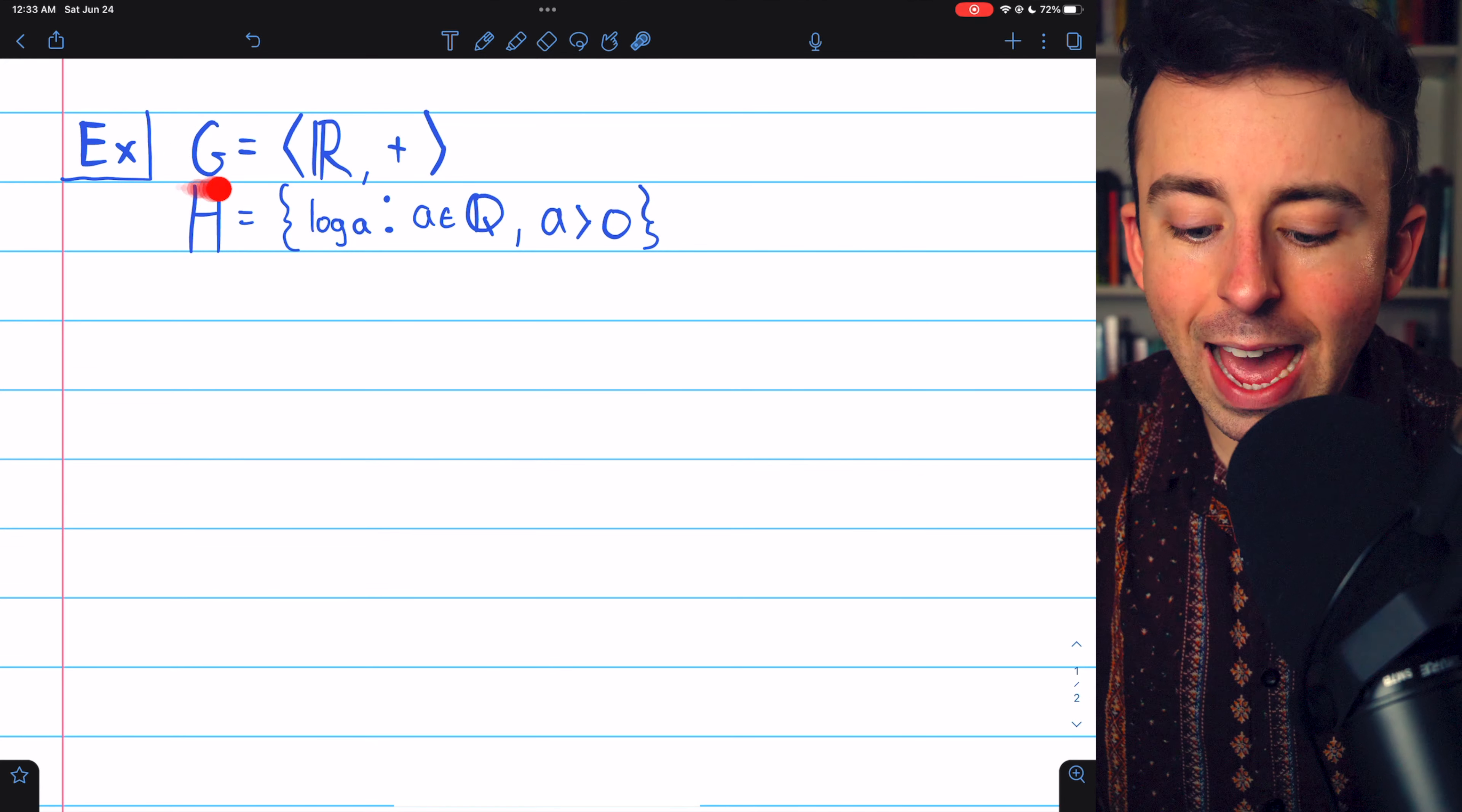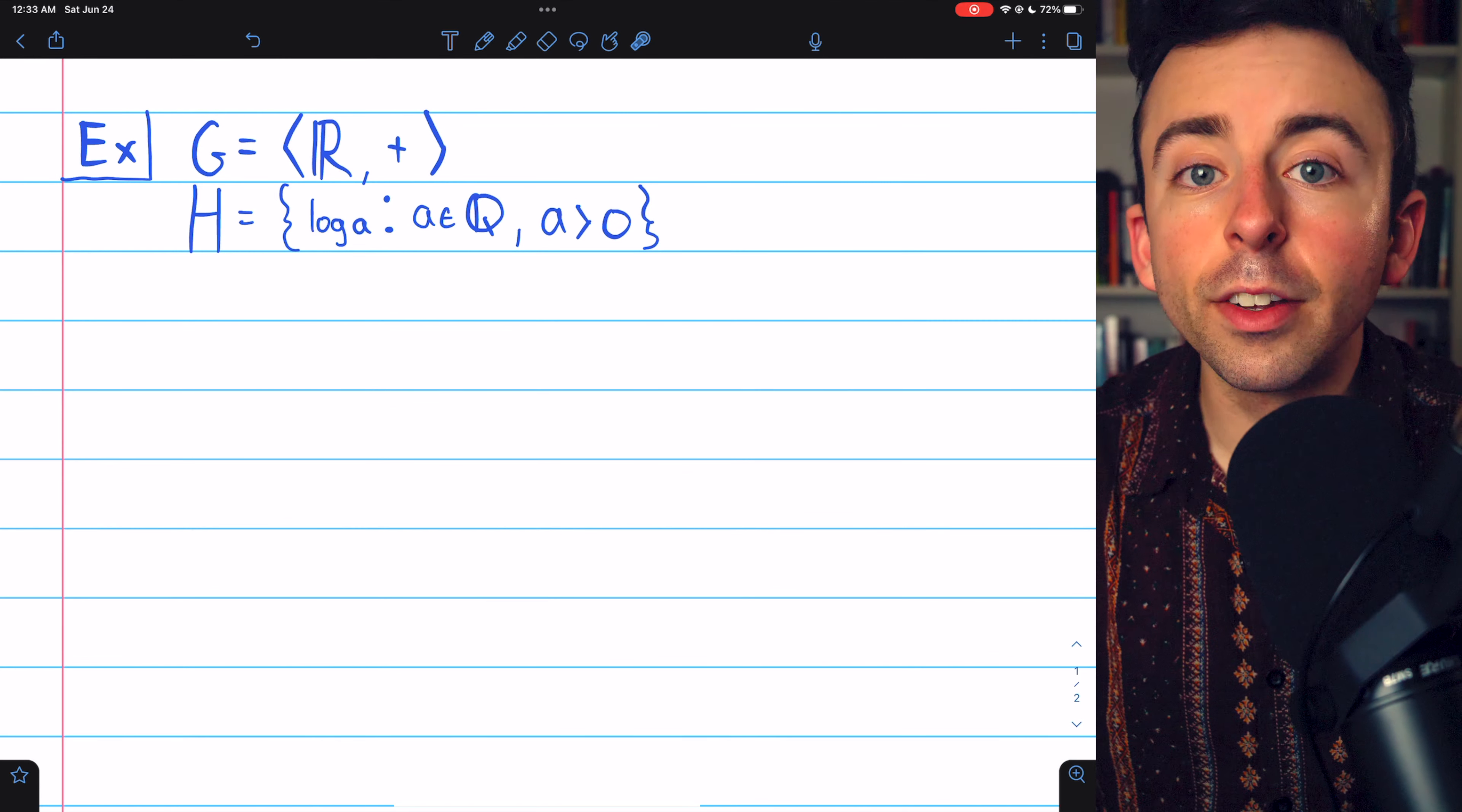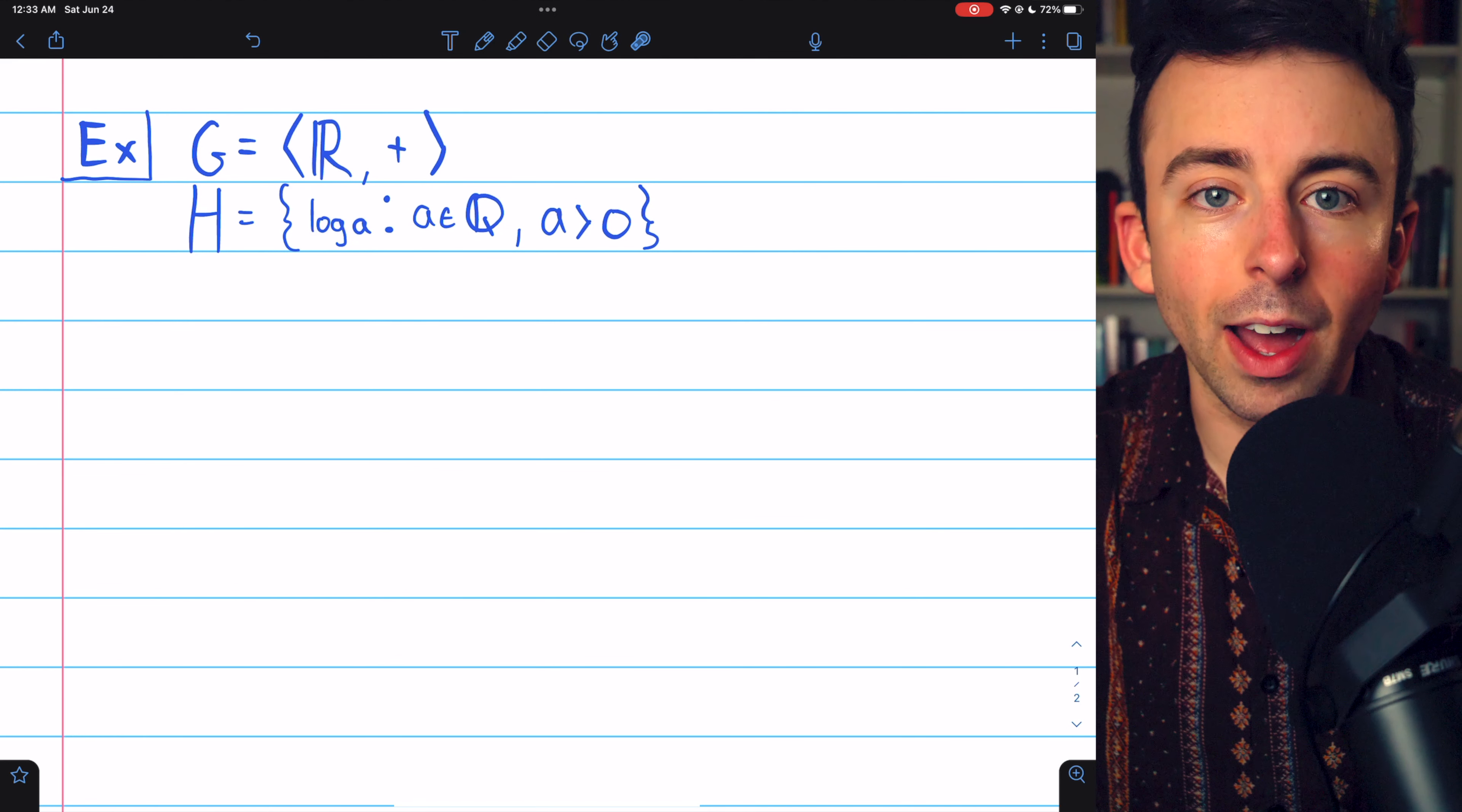For our example, consider the additive group of real numbers and the subset H consisting of the logarithms of all positive rationals. Certainly, H is non-empty because there are positive rationals and their logarithms are defined.